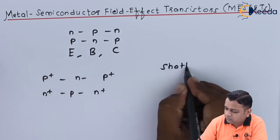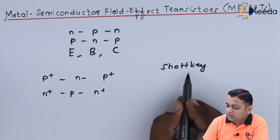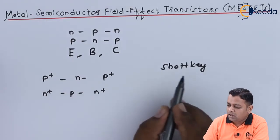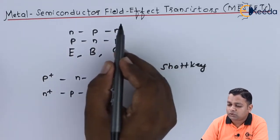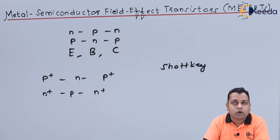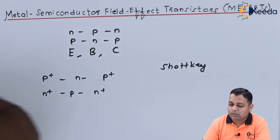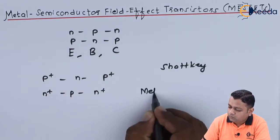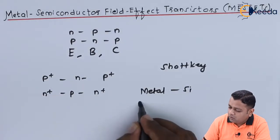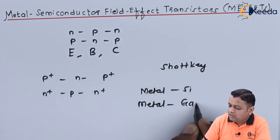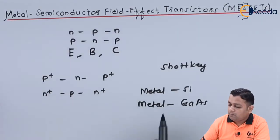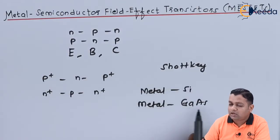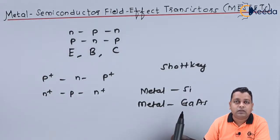MESFETs were originally developed by Schottky. Schottky invented the Schottky barrier potential, and when this was applied to the field effect transistor, this family member of the FET was invented. There are many advantages of using metal-to-semiconductor field effect transistors. Most commonly, metal-to-silicon or metal-to-gallium arsenide material is used for the production of MESFETs.